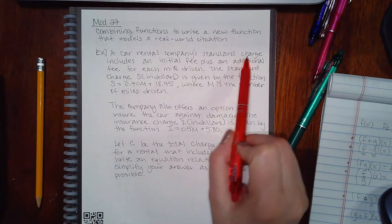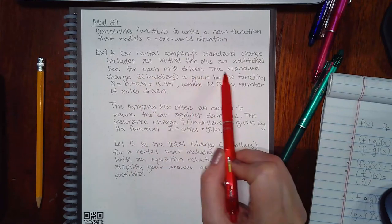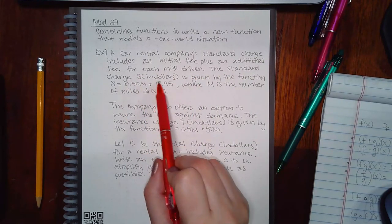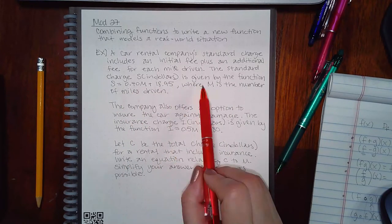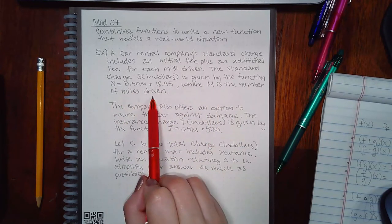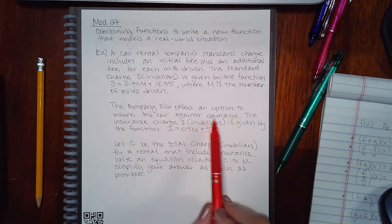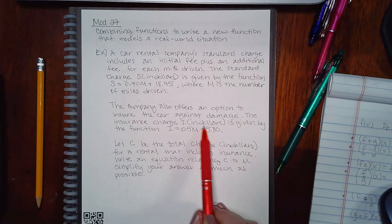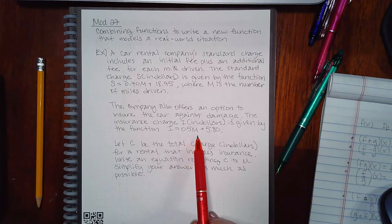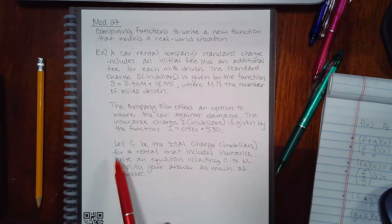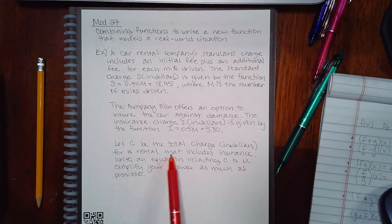The company's standard charge includes an initial fee plus an additional fee for each mile driven. The standard charge S in dollars is given by the function S equals this amount, where M is the number of miles driven. The company also offers an option to insure the car against damage. The insurance charge I in dollars is given by the function I equals 0.5M plus 580.